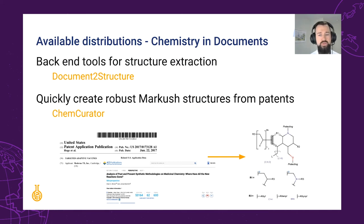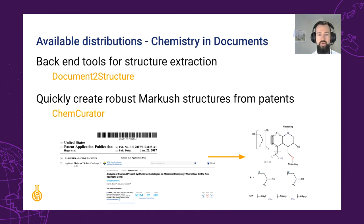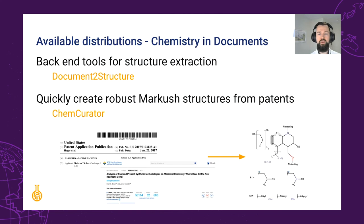ChemCurator also makes use of the text and image recognition I've mentioned, annotating documents such as patents in a user interface. This allows for great flexibility in the exports, and also enables ChemCurator's advanced Markush generation interface. Here you can use the recognized entities to semi-automatically replicate the Markush structure needed to characterize the chemical space of the patent exhaustively.